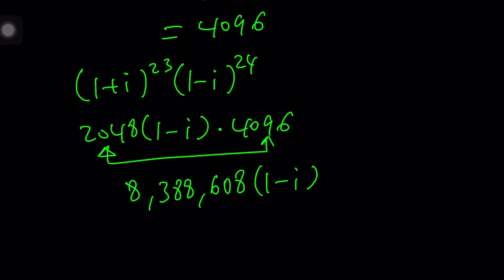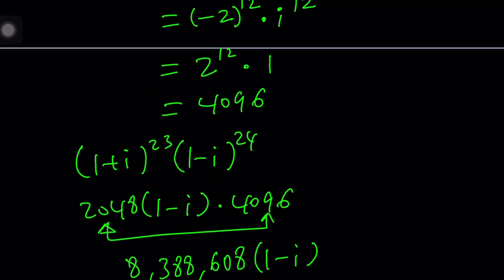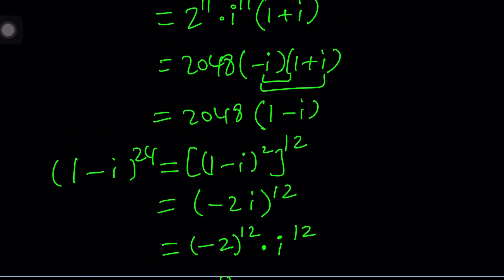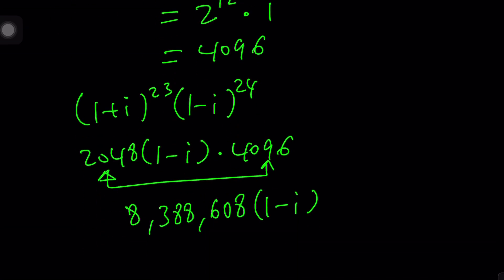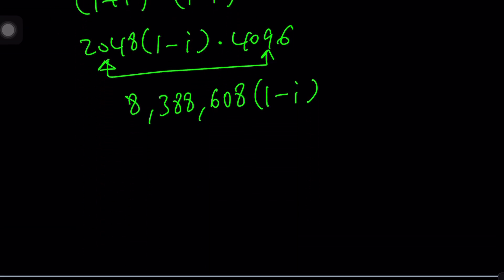But where does that number come from and what is it? What is 8 million something something? Well, remember, one of these was 2 to the 12th. The other one is 2 to the 11th. So their product is going to be 2 to the power of 23. So this is what that number is. Such a large number. You can leave the answer like that. So far, so good. Now, let's take a look at the third method.